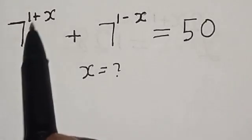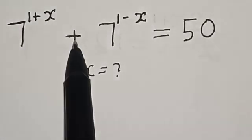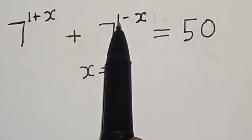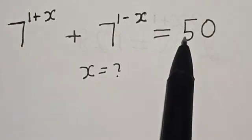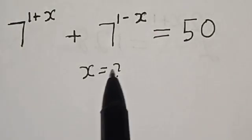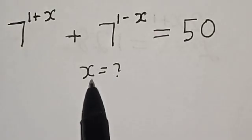7 raised to the power 1 plus s, plus 7 raised to the power 1 minus s, is equal to 50. What is the value of s?